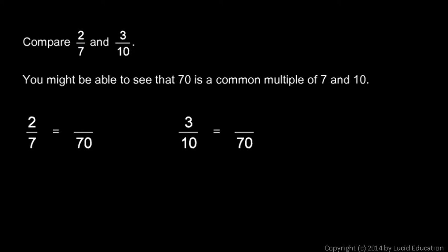So I'll take my two-sevenths and rewrite it with a denominator of 70, and also the three-tenths, rewrite that with a denominator of 70. Okay, the first one here, two-sevenths.